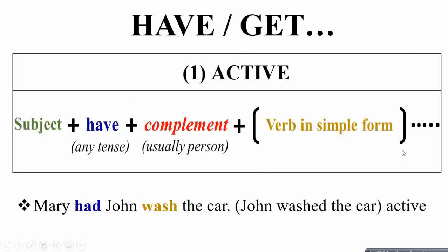Let's see the sentence structure with an example: 'Mary had John wash the car.' This is the active clause where 'had' is followed by a simple verb form — that's how you infer that John washed the car for Mary.